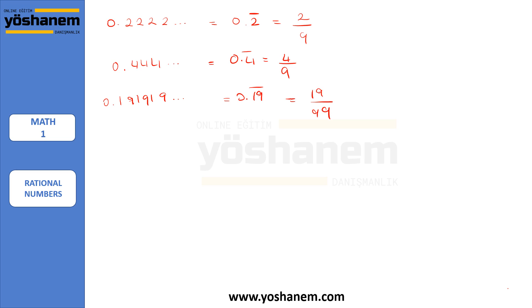So if all the numbers repeat after the point, you simply write 9s as the number that repeat in the denominator. For example, here one number is repeating and there is one 9 in the denominator. Here two digits are repeating, so that's why I need two 9s in the denominator.